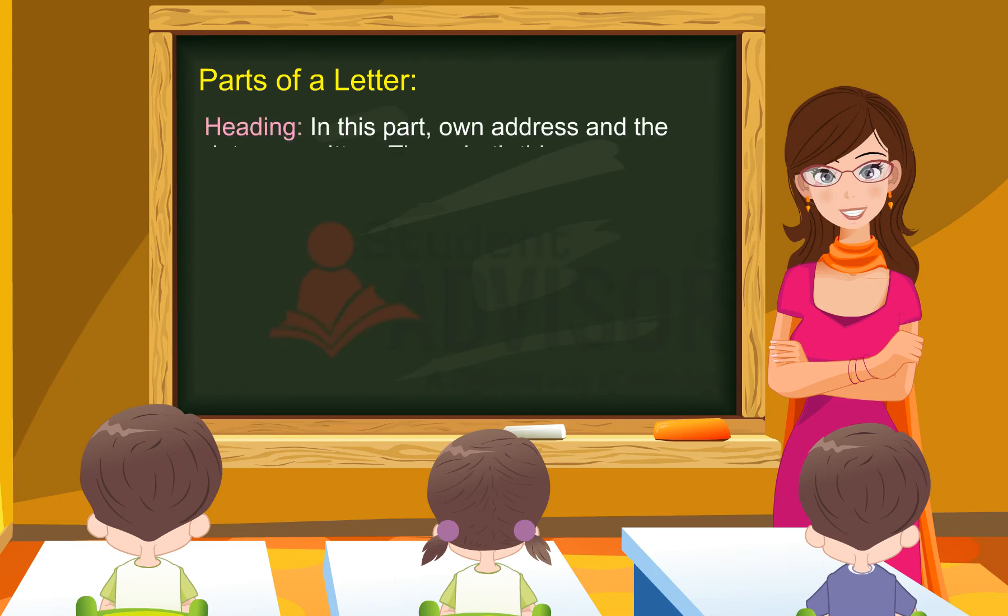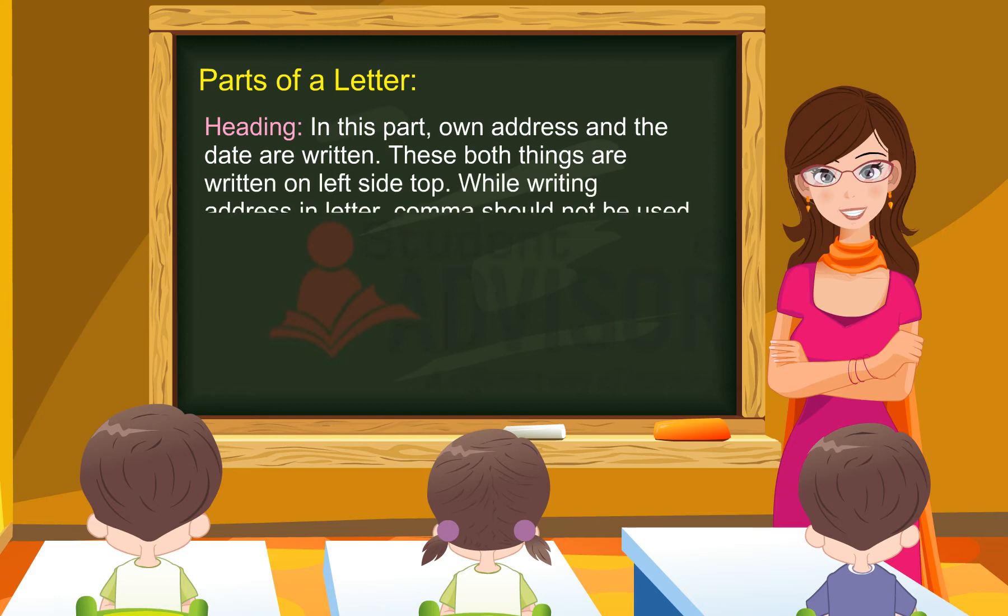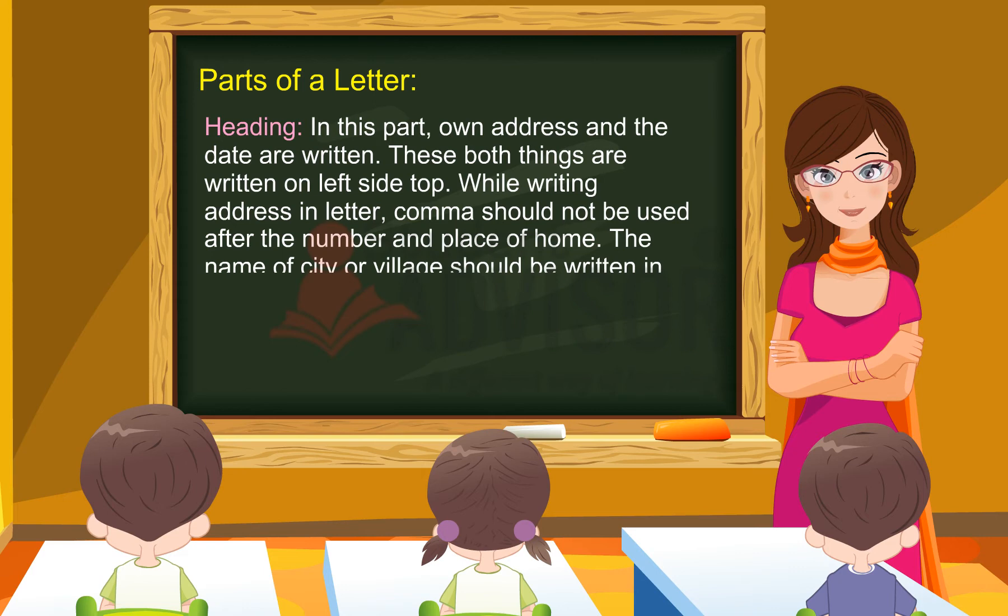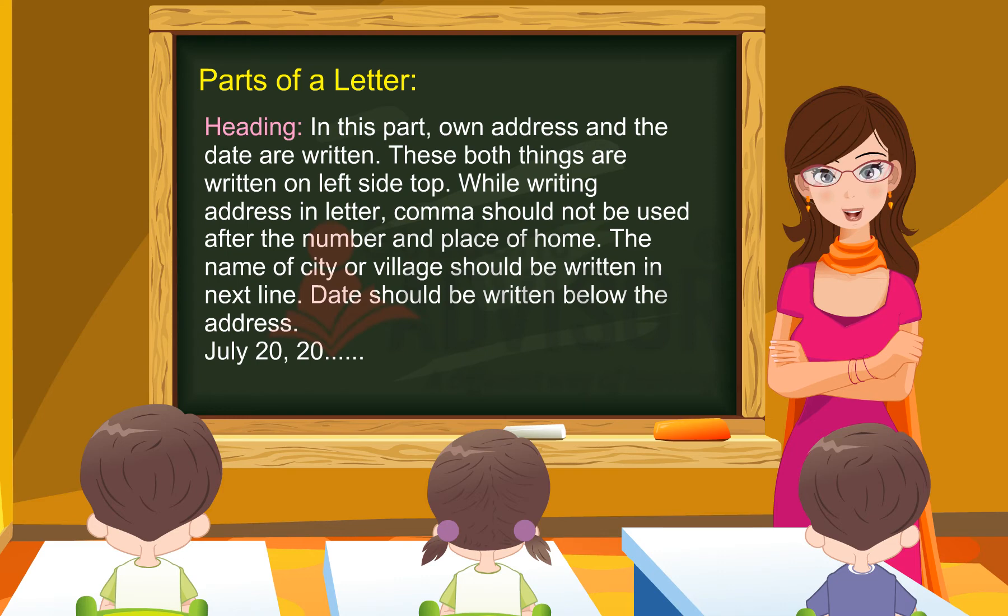Parts of a Letter. Heading: In this part, own address and the date are written. These both things are written on the left side top. By writing address and letter, comma should not be used after the number and place of home. The name of city or village should be written in next line. Date should be written below the address.